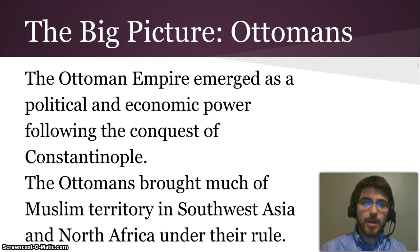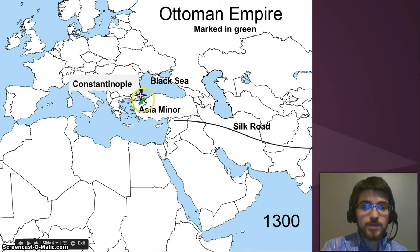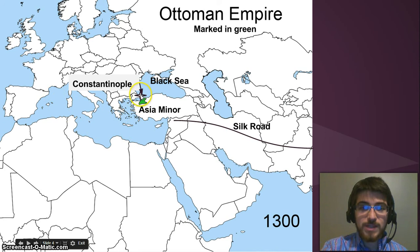Here's the big picture for the Ottomans. The Ottoman Empire emerged as a political and economic power following the conquest of Constantinople. Ottomans brought much of Muslim territory in Southwest Asia and North Africa under their rule. Remember the Silk Road coming along from China ending up right here at the Mediterranean Sea. You've also got the Black Sea up here, which is where most trade then reached Europe from the Ottoman Empire. Coming along the Silk Road would hit the Ottoman Empire and then get up into Europe. But before the Ottoman Empire even got to be a big thing, there was a tiny little group of people who lived right here in a place called Asia Minor. The major empire in the area was called the Byzantine Empire, and they owned this place called Constantinople that sits right on this little spit of land that divides the Black Sea from the Mediterranean area. That was important because they could control trade from the Black Sea down to the Mediterranean and the Silk Road trade. So Constantinople was a really rich city because they controlled all these trade routes.